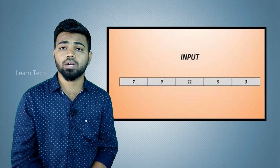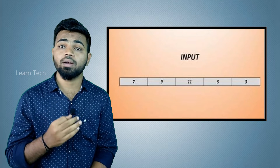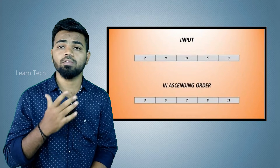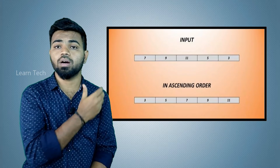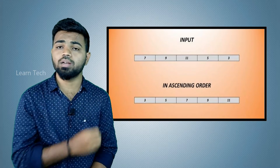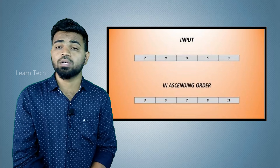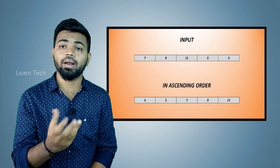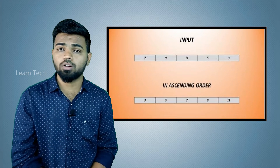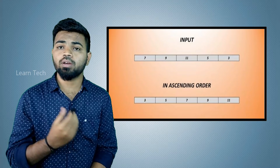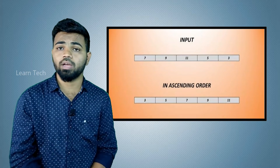We can use the numbers 7, 9, 11, 5, 3 — these are random. You can sort them in ascending order. Now, we will search for the number 9. We will search for 9 but we will not use any algorithm — we will do a linear search.